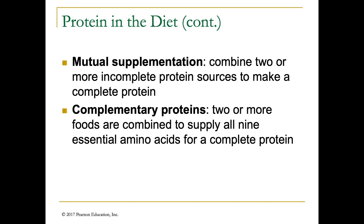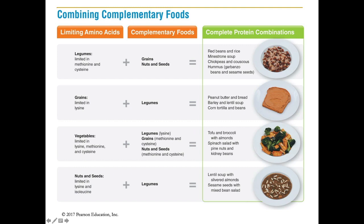Complementary proteins are two foods that together provide all nine essential amino acids. Legumes tend to be limited in the amino acids methionine and cysteine, so when eating legumes you can complement them with grains, nuts, and seeds because those contain methionine and cysteine. Examples include red beans and rice, minestrone soup, chickpeas and couscous, or hummus — which is garbanzo beans and sesame seeds. Grains are limited in lysine, so you pair them with legumes which contain lysine — peanut butter and bread is actually a complete protein.